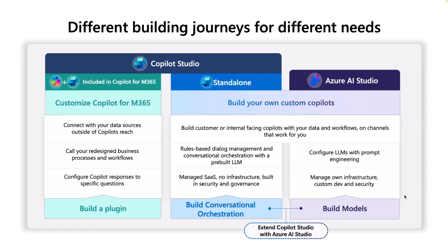Let's start with M365 Copilot extensibility. Think of it like a smart speaker. You have a smart speaker — you're not going to change how you talk to it. You're not going to start texting it just because you want to. So there is a channel limitation associated with it. And you're not going to tell your smart speaker it can't set a timer, or an alarm, or answer weather questions — those are out-of-the-box capabilities. M365 Copilot has out-of-the-box capabilities, but you can extend a smart speaker to control your thermostat at home. Thinking about extensibility of M365 Copilot in that manner will really help you understand what you're doing there.